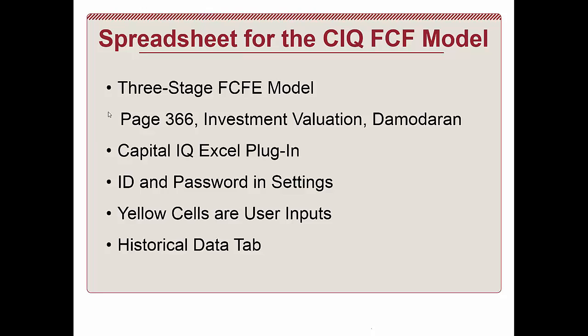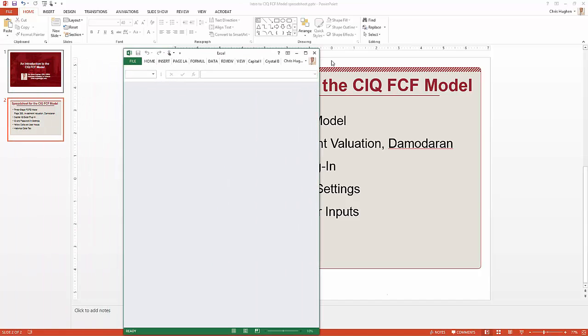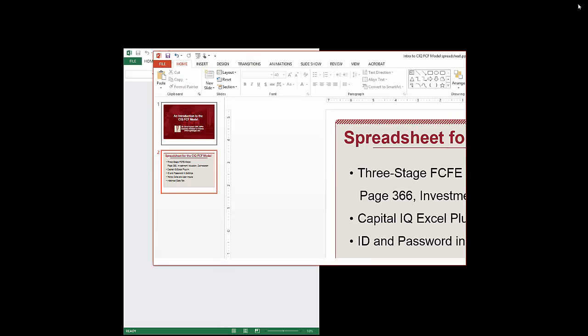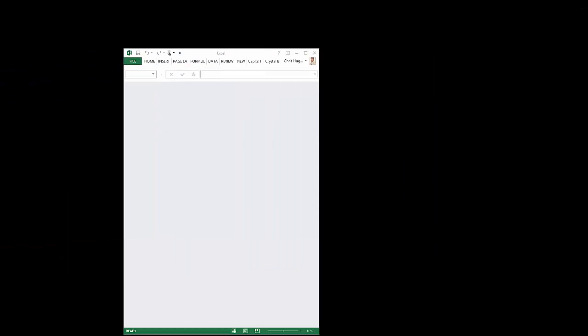He describes this three-stage cash flow model which this spreadsheet is based on. I'd like to review a couple of things associated with the spreadsheet, but it's probably useful to just pull up the spreadsheet and show you the details associated with it.